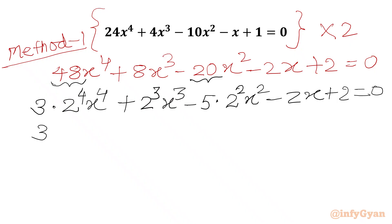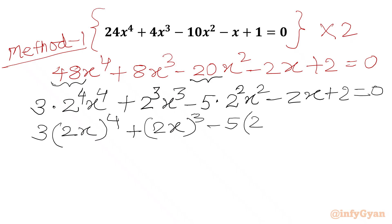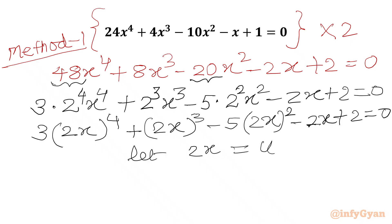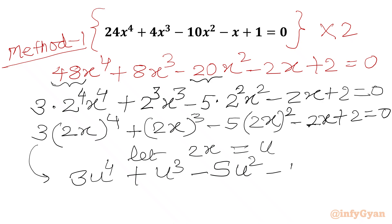Now I can use the exponent law and write 3 times (2x)⁴ plus (2x)³ minus 5 times (2x)² minus 2x plus 2 equal to 0. Now we will assume 2x is equal to u. So I can write our equation in variable u: 3u⁴ plus u³ minus 5u² minus u plus 2 equal to 0.